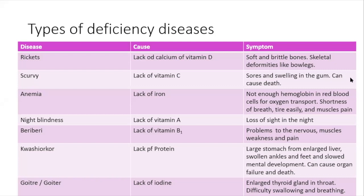Night blindness — some people find it very extremely difficult to see at night more than others. Night blindness is caused by a lack of vitamin A. This goes back to what we talked about last class: vitamin A is important to sight. So when you don't have enough vitamin A in your diet, it can lead to night blindness. The symptom is loss of sight in the night.